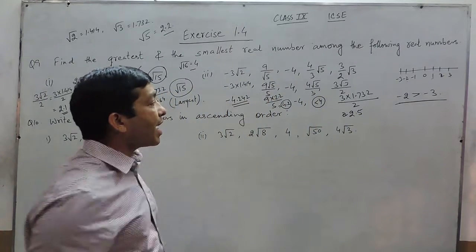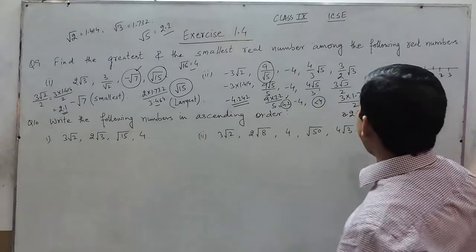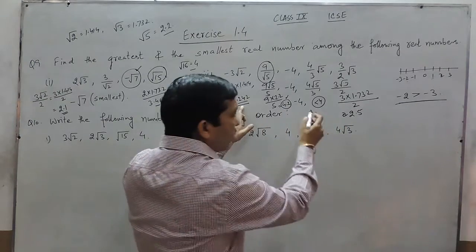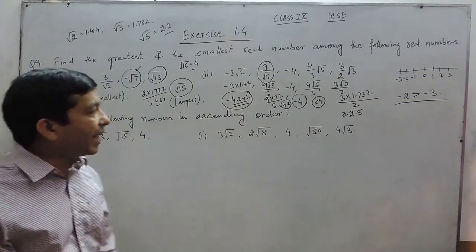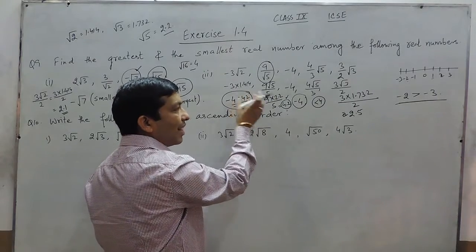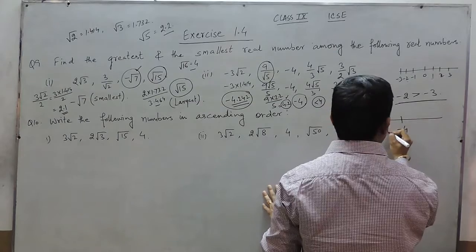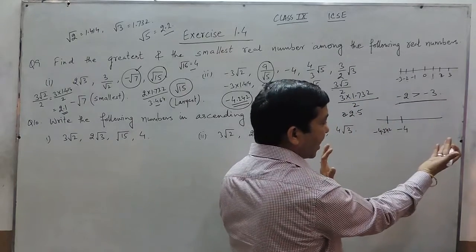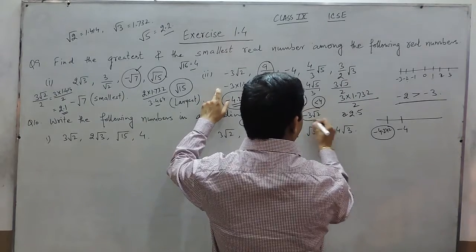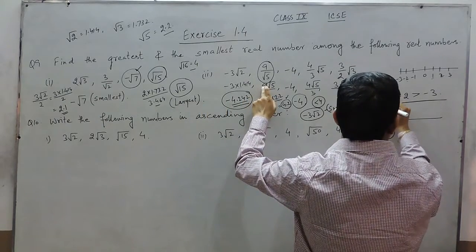So the positive number 9/√5 (approximately 4.2) is the largest real number among all of them. When we talk about the smallest real number, we have to compare the two negative terms. If the absolute value is more, the number is less. On the number line, minus 4 is to the right and minus 4.242 is further to the left. The right hand side number is always greater. So minus 3√2 is the smallest number, and 9 upon under root 5 is the largest number.